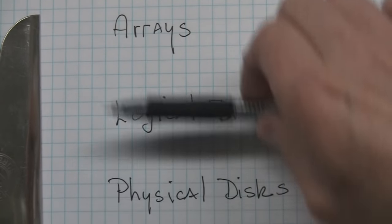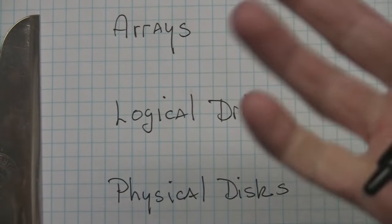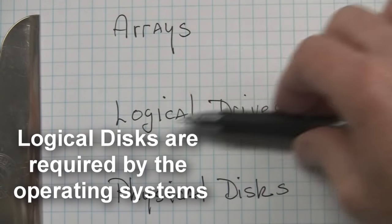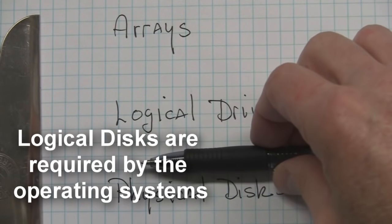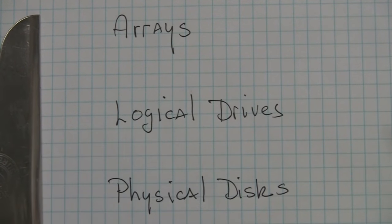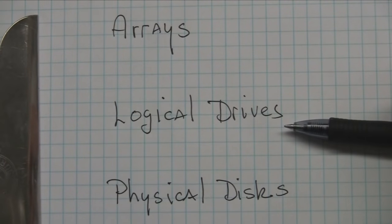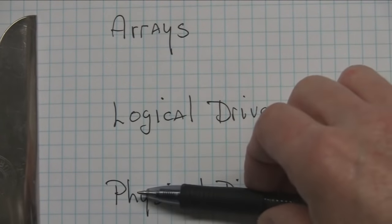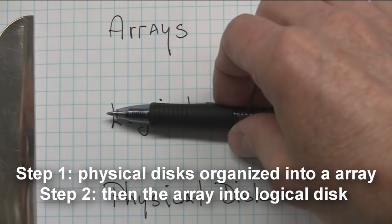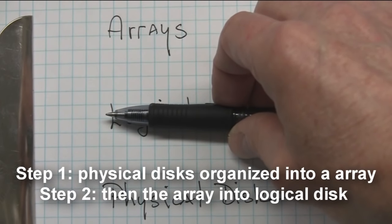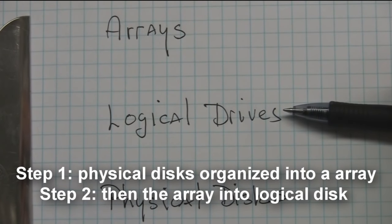Back to our discussion: we always take physical disks and put them into an array. That array could be one physical disk, two physical disks, or three. Now, what are logical disks? Logical disks are what is necessary for the operating system to see. In order for the operating system to function with the disks, they must be created as logical disks. So we take physical disks, put them into arrays, and then from the arrays we create a logical disk.